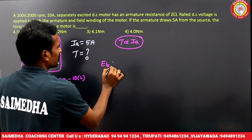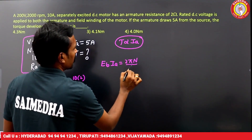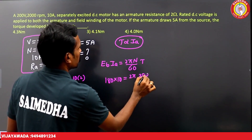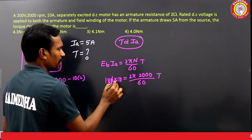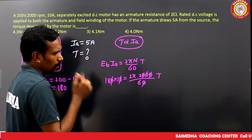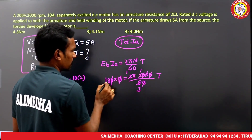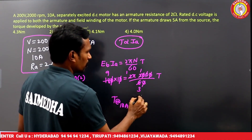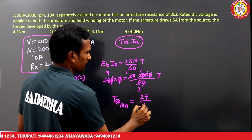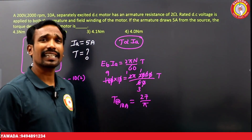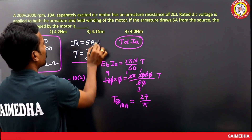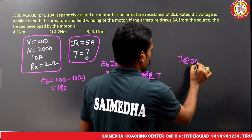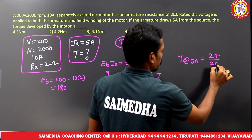Using Eb × Ia = (2πN/60) × T: 180 × 10 = (2π × 2000/60) × T. Solving gives T at 10 amperes = 27/π Newton-meters. Since torque is proportional to Ia, at 5 amperes the torque is halved: T = 27/(2π) Newton-meters.